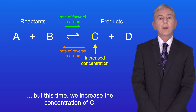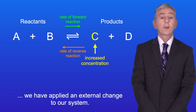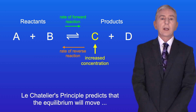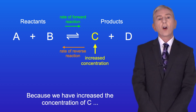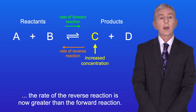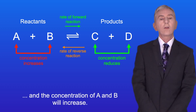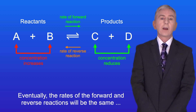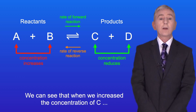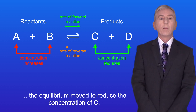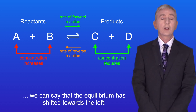Now imagine that we took the same reaction, but this time we increased the concentration of C. Because we now have more molecules of C, we've applied an external change to our system. Le Chatelier's principle predicts that the equilibrium will move in the direction that reduces the effect of this change. Because we've increased the concentration of C, the rate of the reverse reaction is now greater than the forward reaction. The concentration of C and D will be reduced, and the concentration of A and B will increase. Eventually the rate of the forward and reverse reactions will be the same, and we will reach a new equilibrium. So when we increased the concentration of C, the equilibrium moved to reduce the concentration of C. Because we've formed more reactants, we can see that the equilibrium has shifted towards the left.